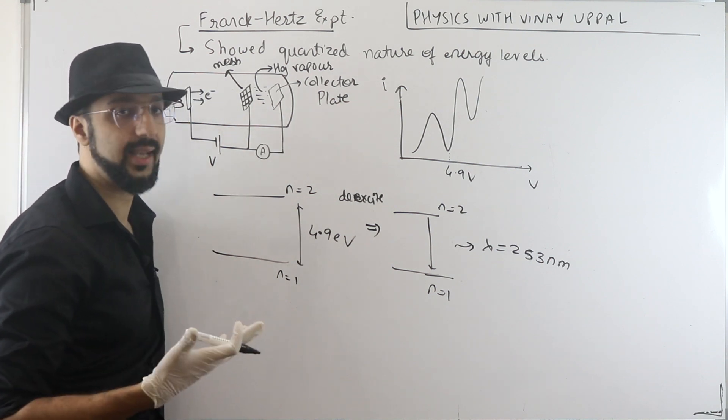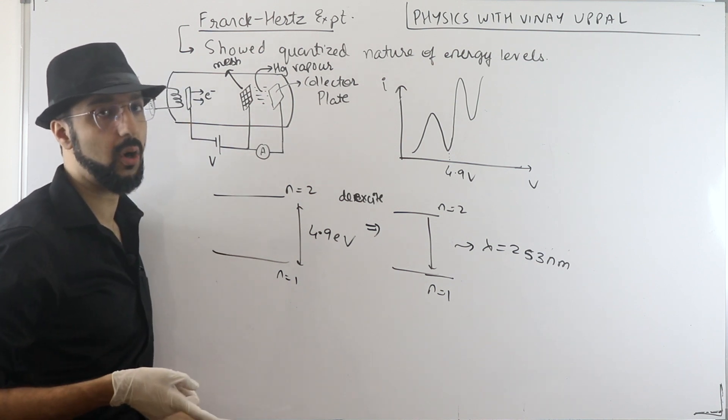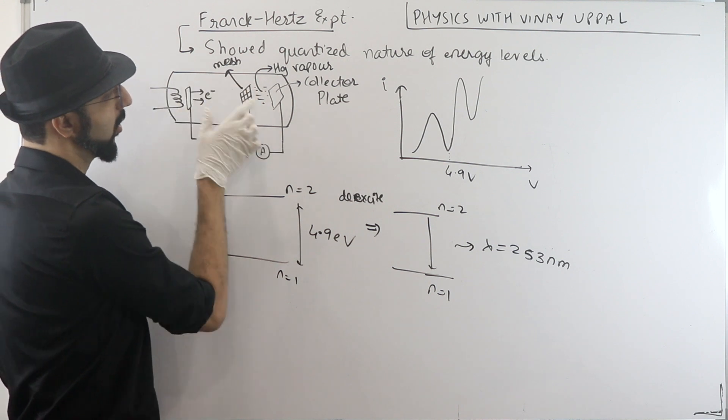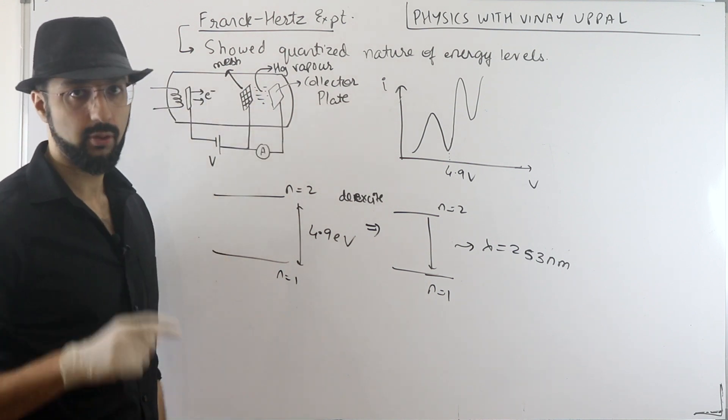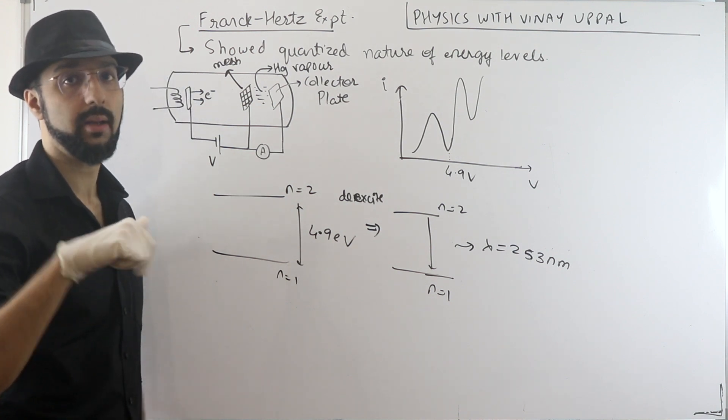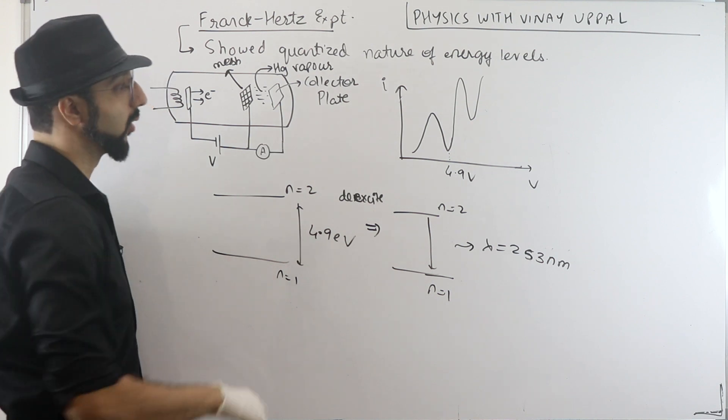All right, so this is how they showed that energy levels are quantized. Because only at 4.9 electron volts, suddenly there's a current drop. Current drops because all the electrons are losing their energy to mercury atoms. The electrons' energy goes to the mercury atom to excite, so the electron energy is finished.